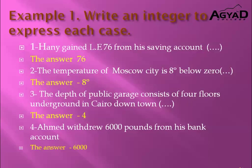Let's solve Example 1: Write an integer to express each situation. Number 1: Hany gained 76 pounds from his savings account. I will write 76 as a positive number, because 'gained' means earned or received. That means 76 is more than 0, so I will write positive 76.